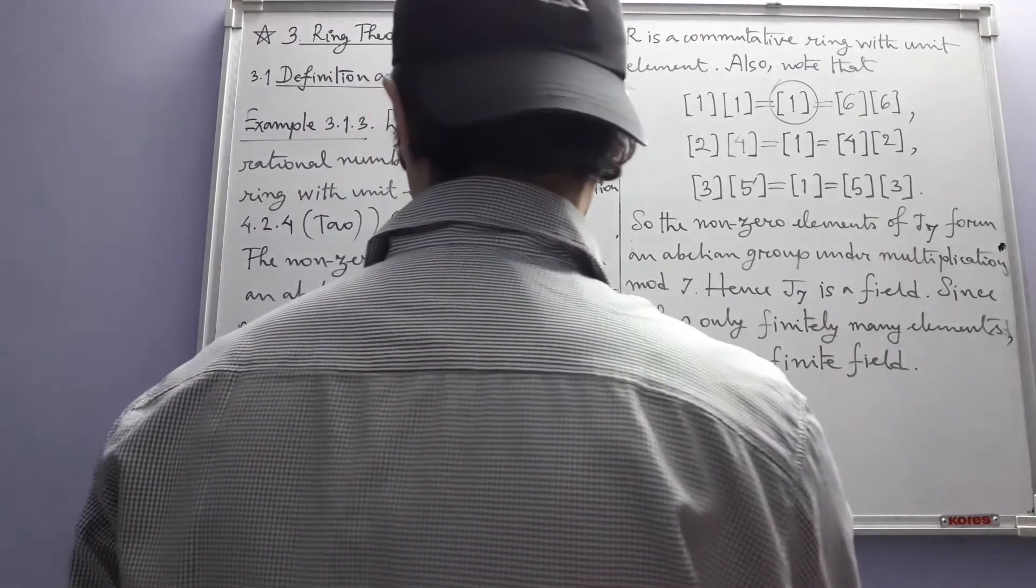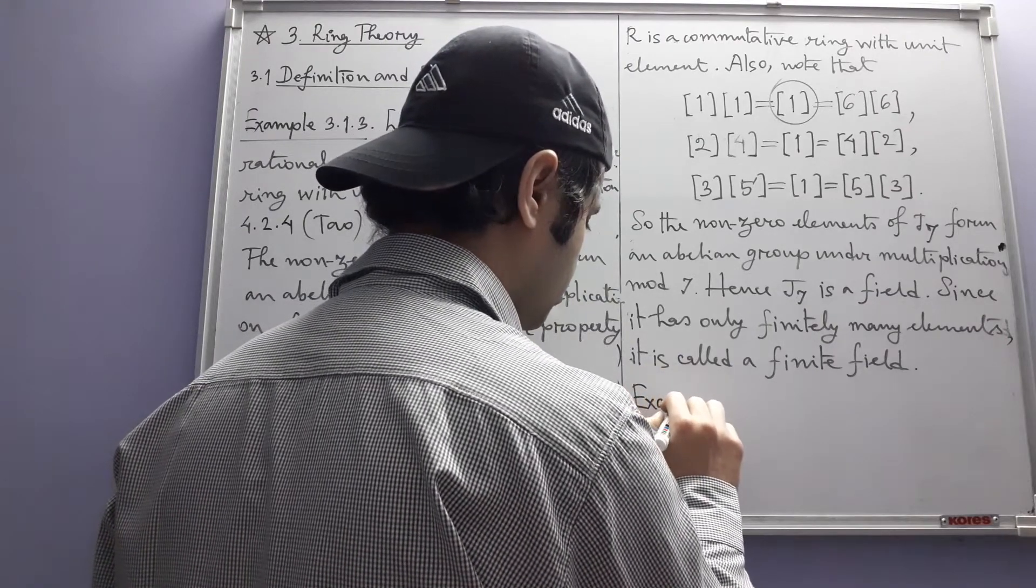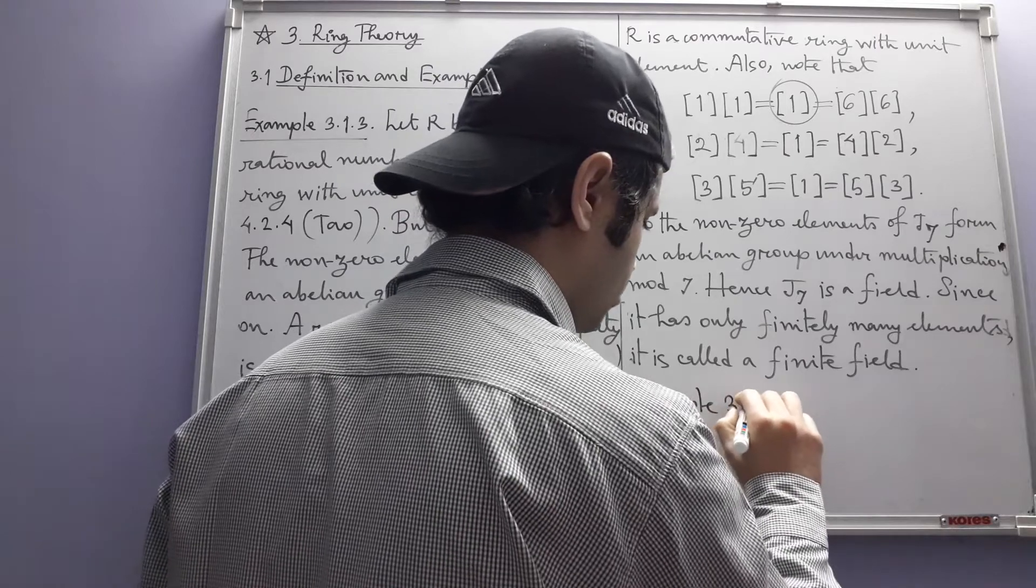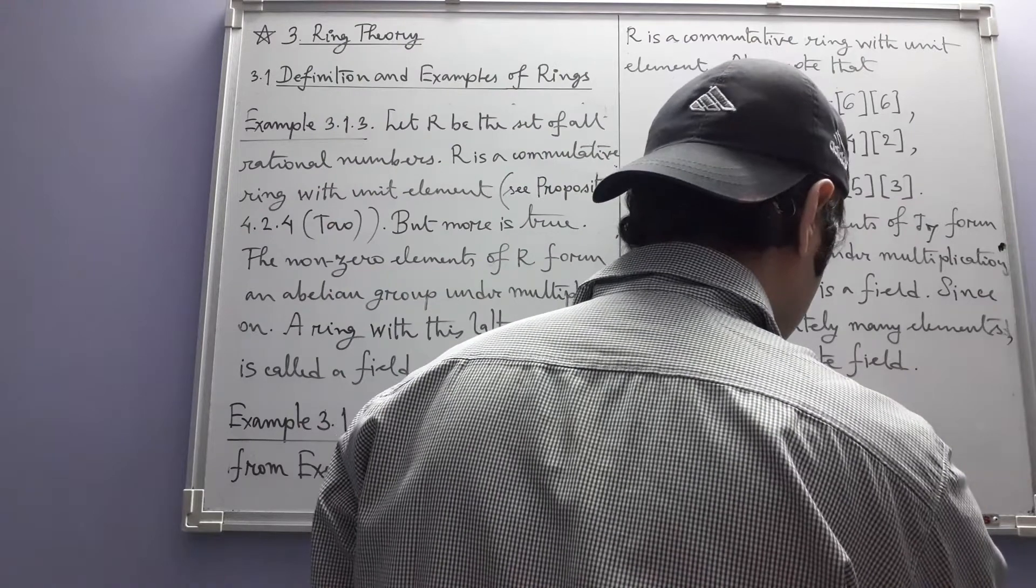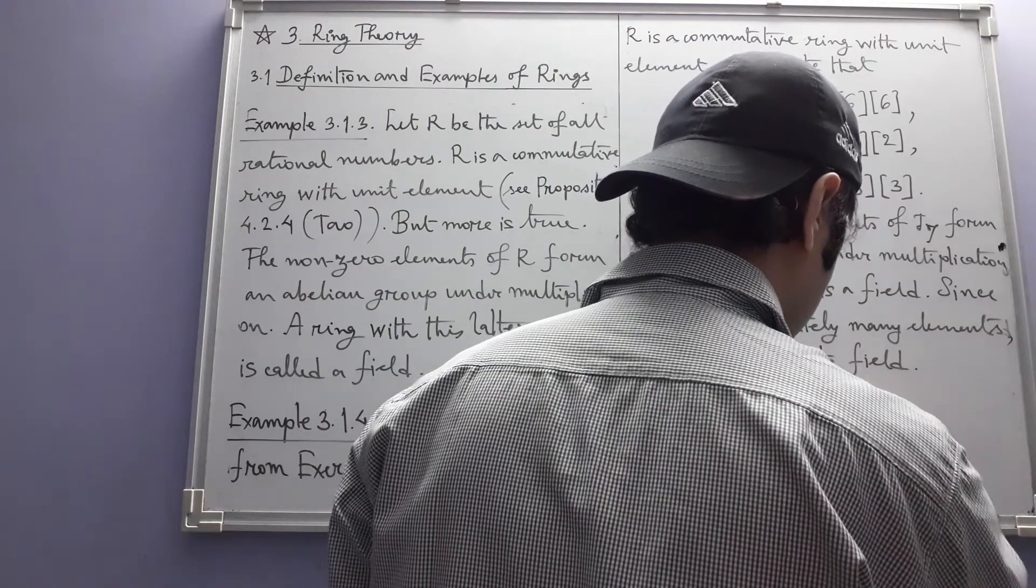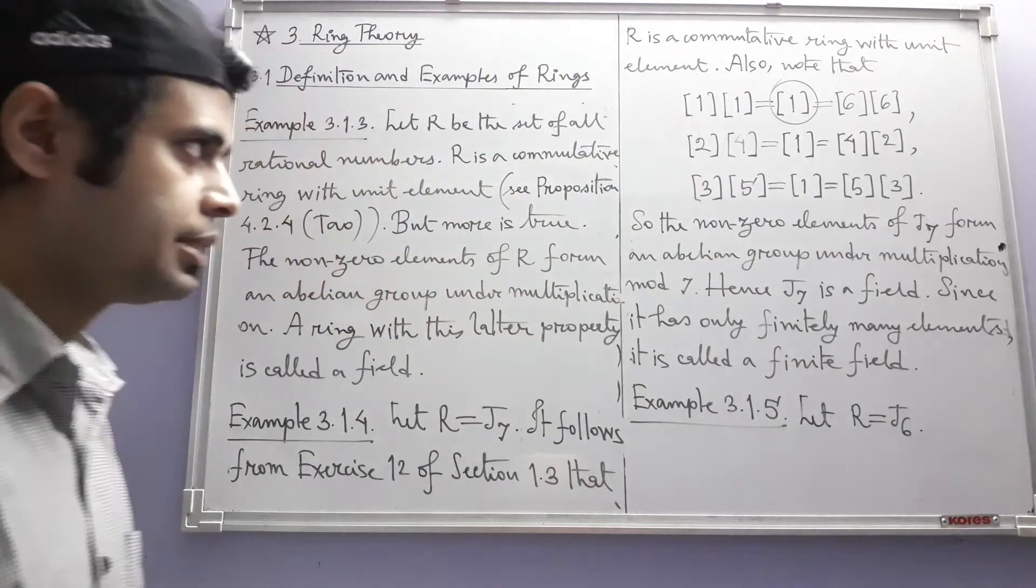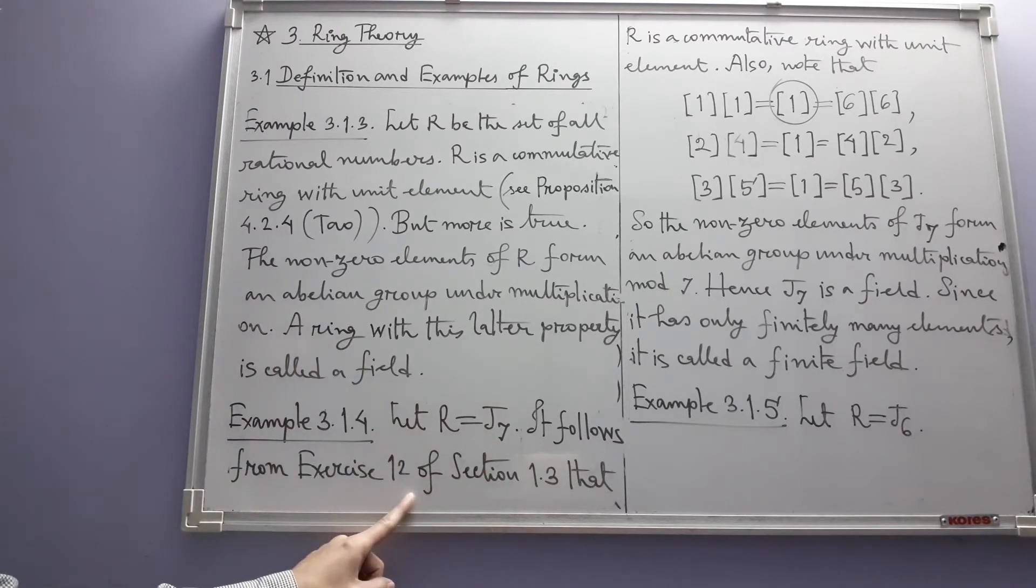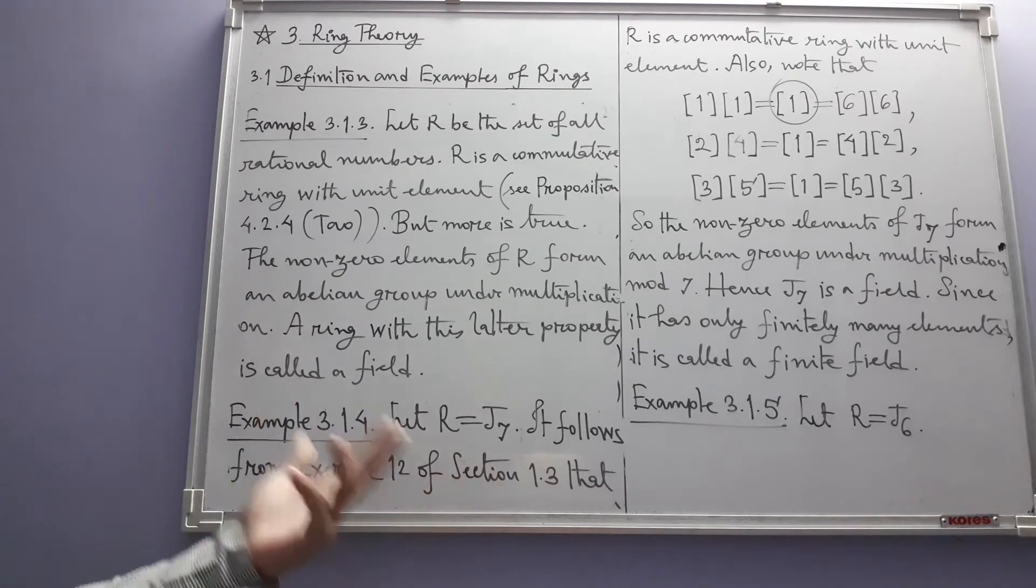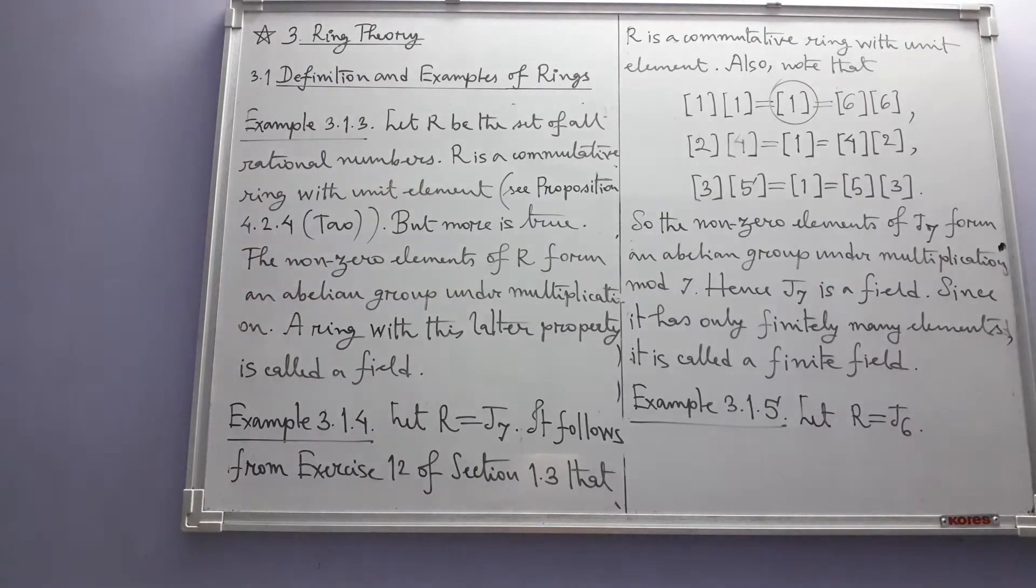Then we see the next example, the fifth one. Let R equal to J6, just like J7. Because our result, this Exercise 12, involves Jn for any positive integer n. So just like J7, J6 is also a commutative ring with unit element.